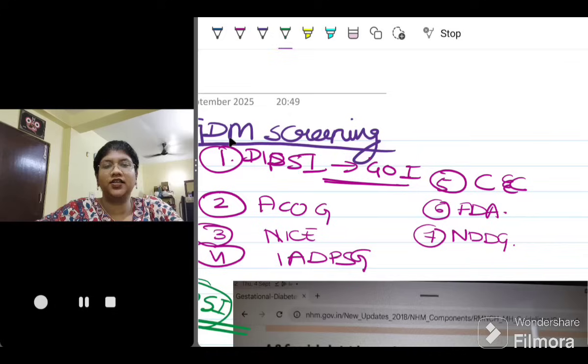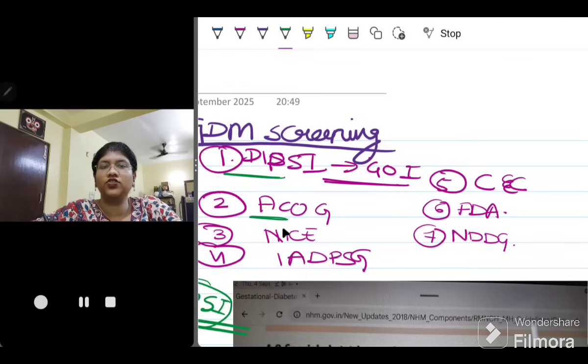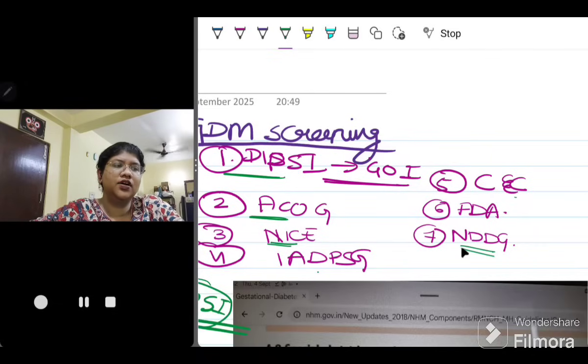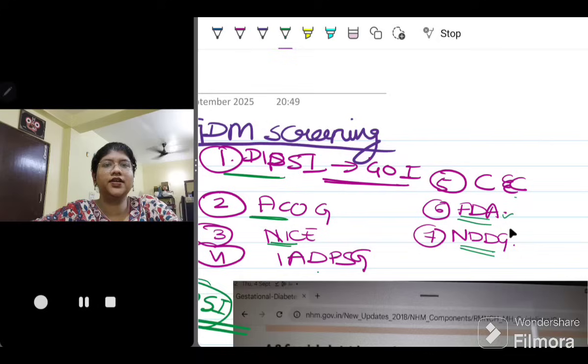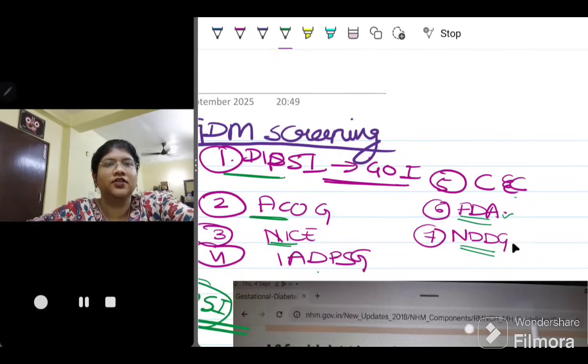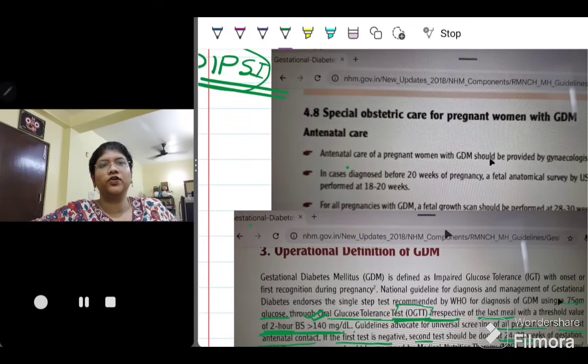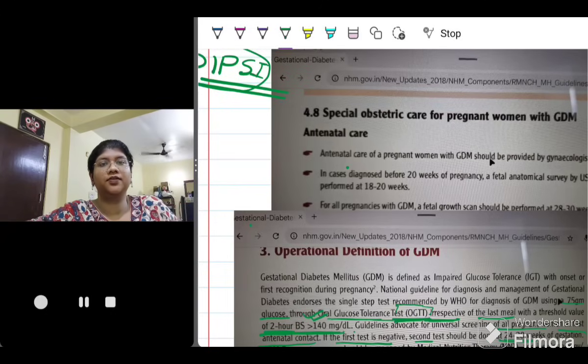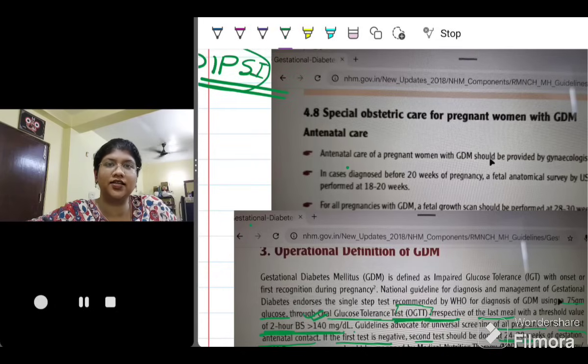Let me highlight all the criteria that we will be discussing today. First is the DIPSI criteria, which is given by the Government of India. Next is the ACOG, that is the American College of Obstetricians and Gynecologists. Next is the NICE guidelines, then is IADPSG criteria, Carpenter and Couston criteria. Also NDDG, American Diabetes Association criteria.